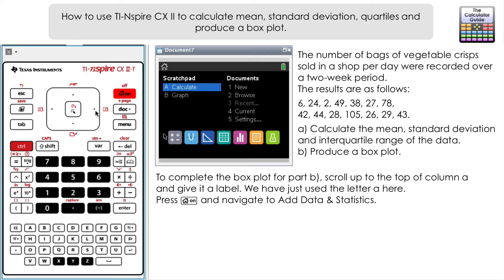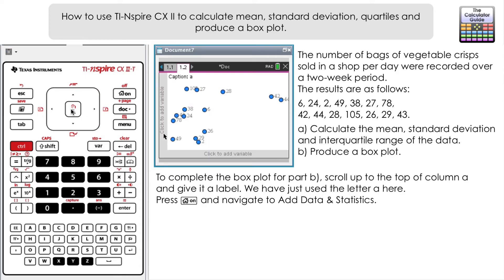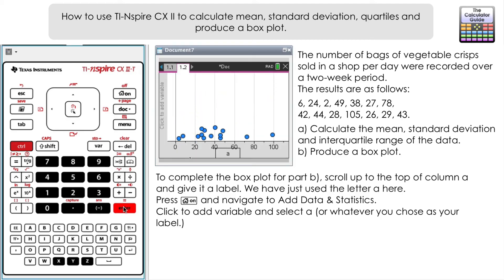Data and Statistics is represented by the bar graph there, so select that one. You can see that's already been populated there with our results from A because we labeled it A. Navigate down to 'Click to add variable' or use the touchpad. If we click on that we can see that we can choose A, so the column that we labeled as A or the data that we labeled as A. Just press enter. It should reorganize itself into a dot plot.